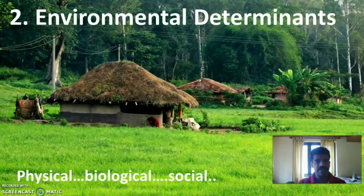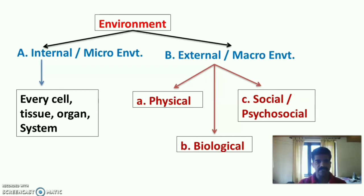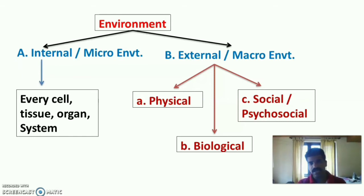The second main factor is environmental determinants. Environment is mainly classified into internal or microenvironment and external or macroenvironment. Internal or microenvironment includes every cell, tissue, organ, and system of our body. External or macroenvironment is again classified into three types: physical, biological, and social or psychosocial.